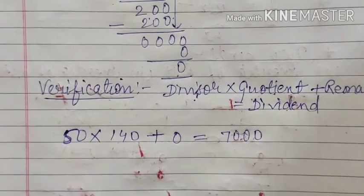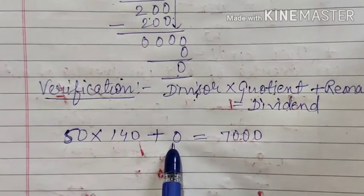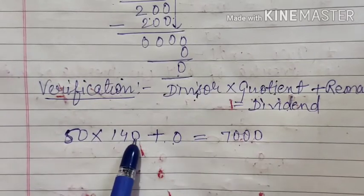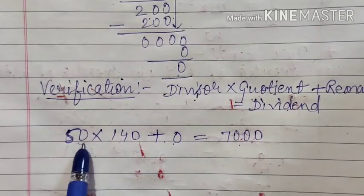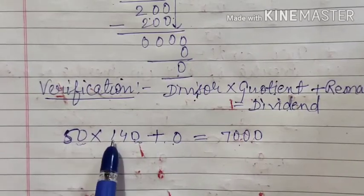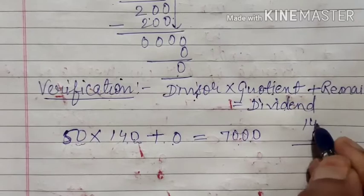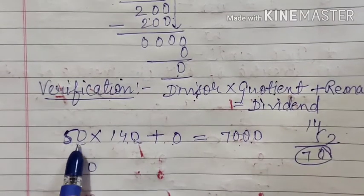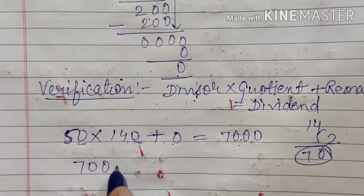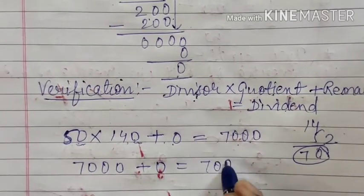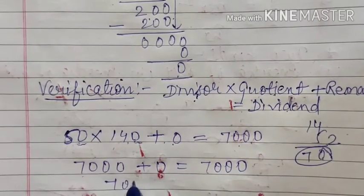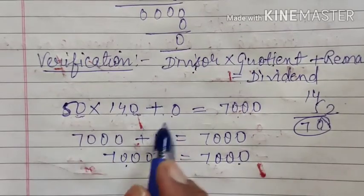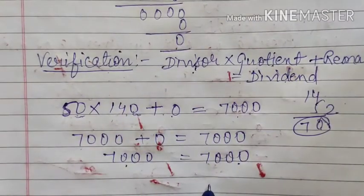Now we have to solve the left hand side. We have to multiply 50 by 140. For once, forget these two zeros and calculate 5 into 40, which gives 20, then carry the 7, giving 70. We write 70 then add back the two zeros we removed, giving 7000. So 7000 plus 0 equals 7000. Left hand side equals right hand side — this confirms our calculation is correct.